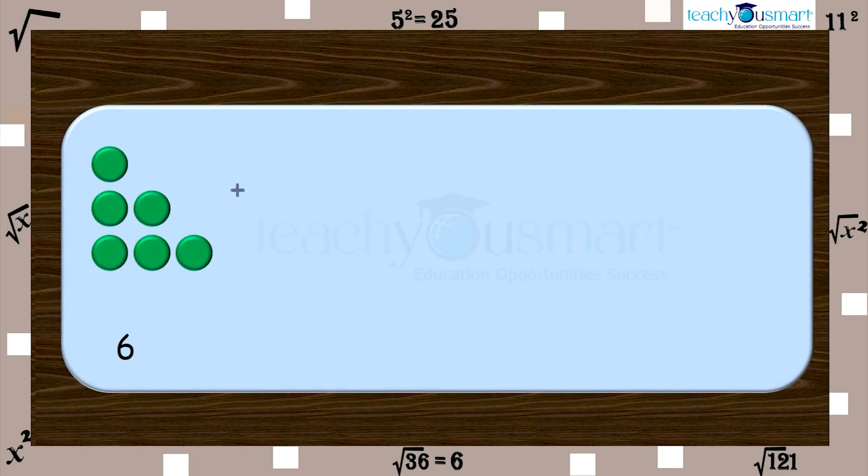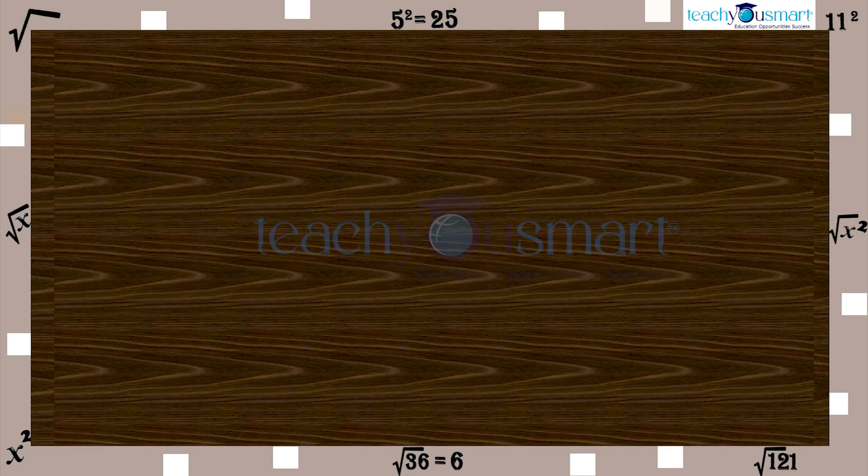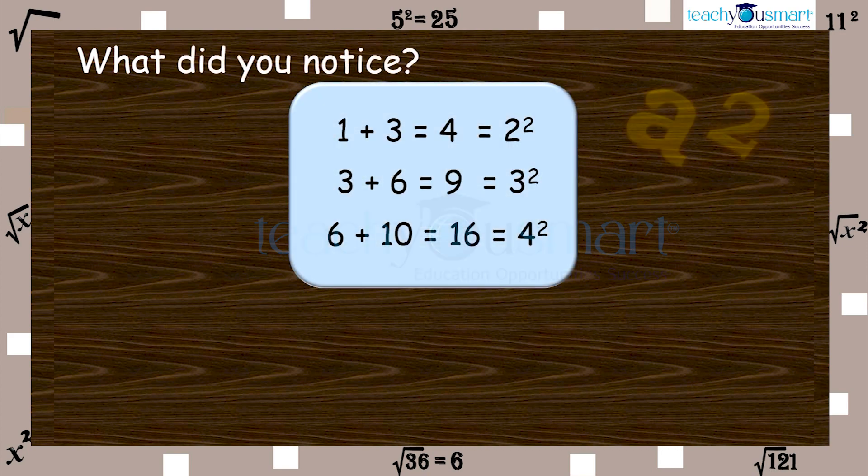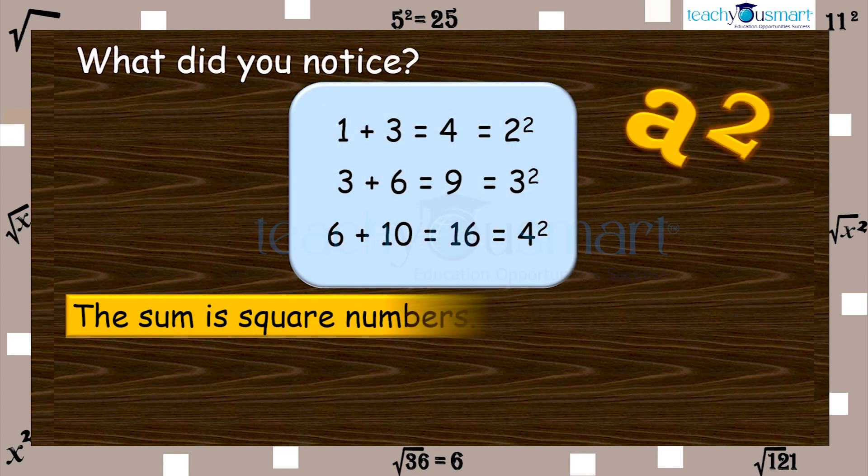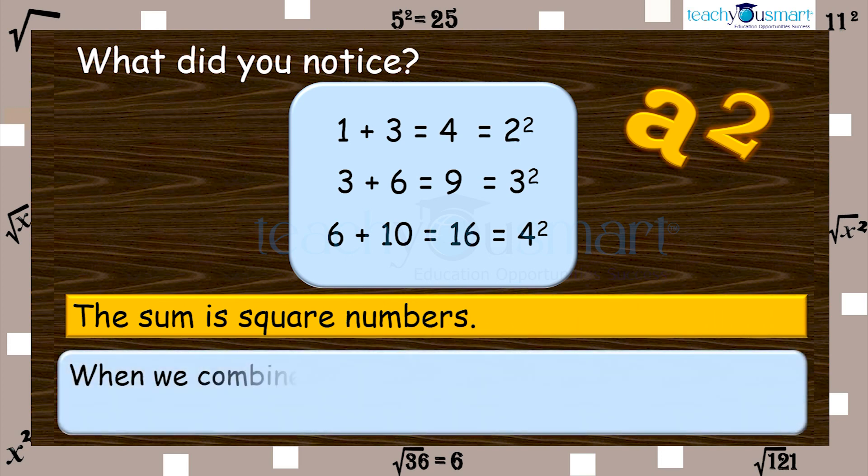Now we can go to 6 and 10. 6 plus 10 equals 16, equals 4 square. Observe their sum, what did you notice? The sum is square numbers, aren't they? Yes. When we combine two consecutive triangular numbers, we will get a square number.